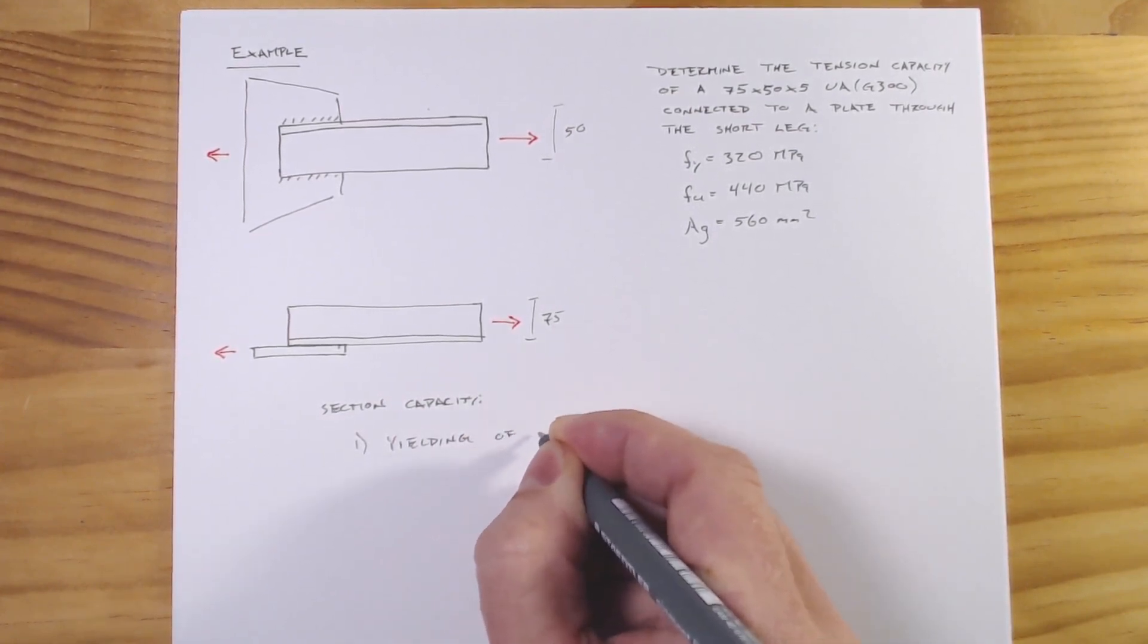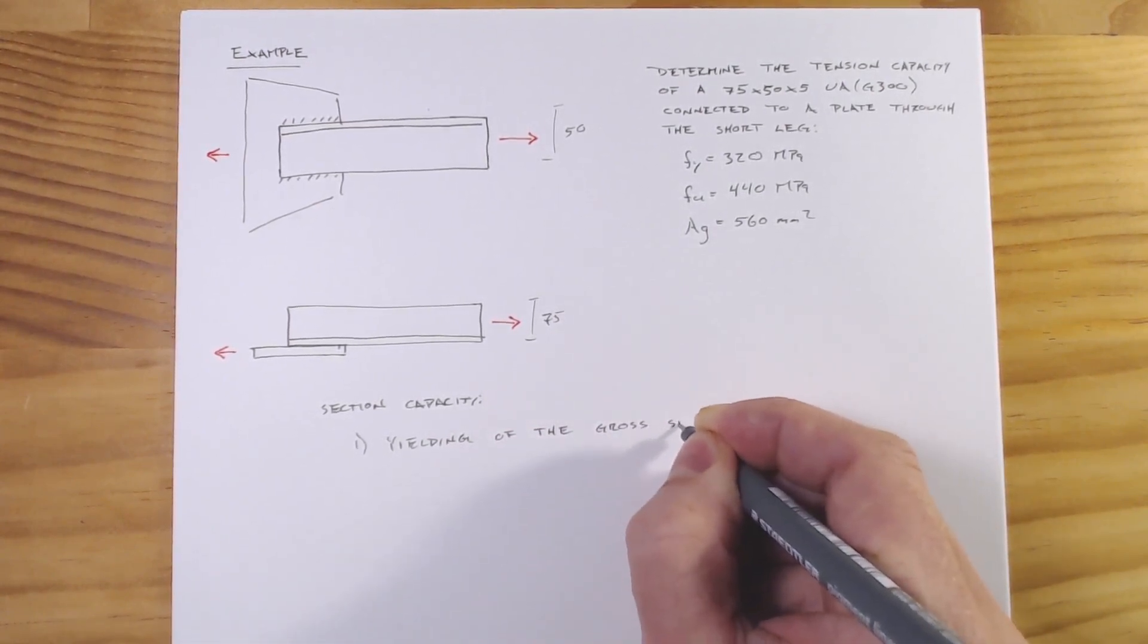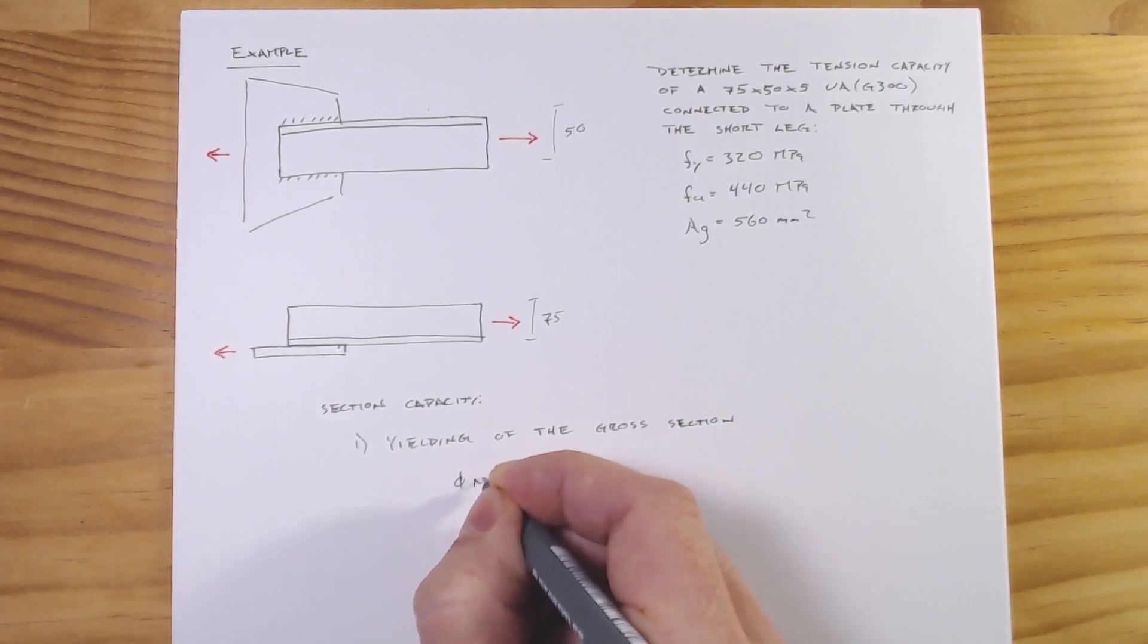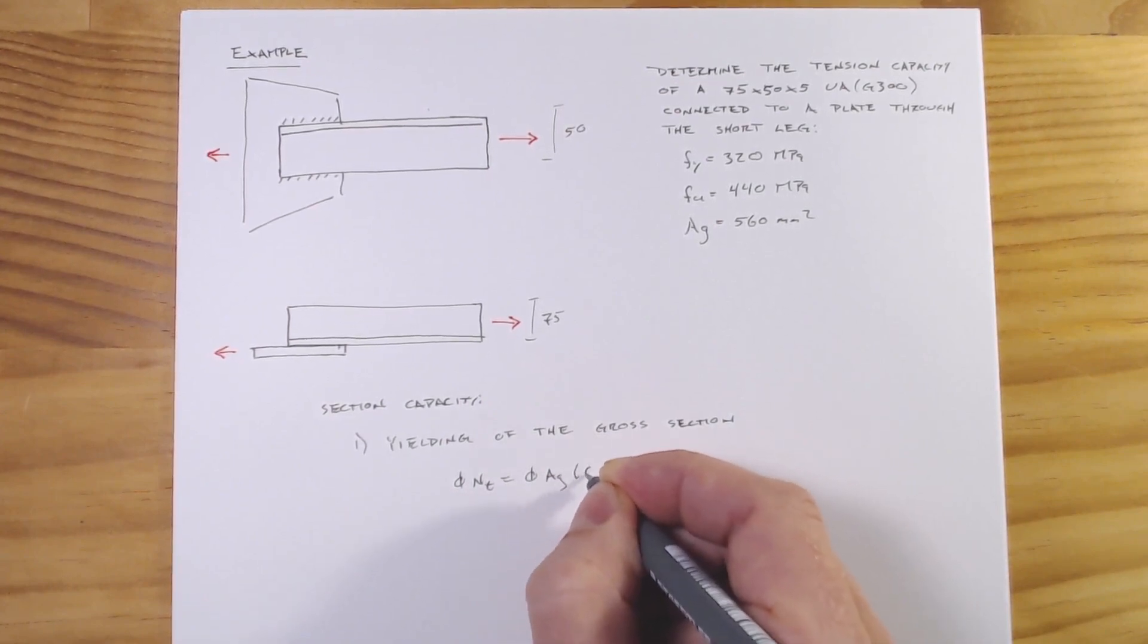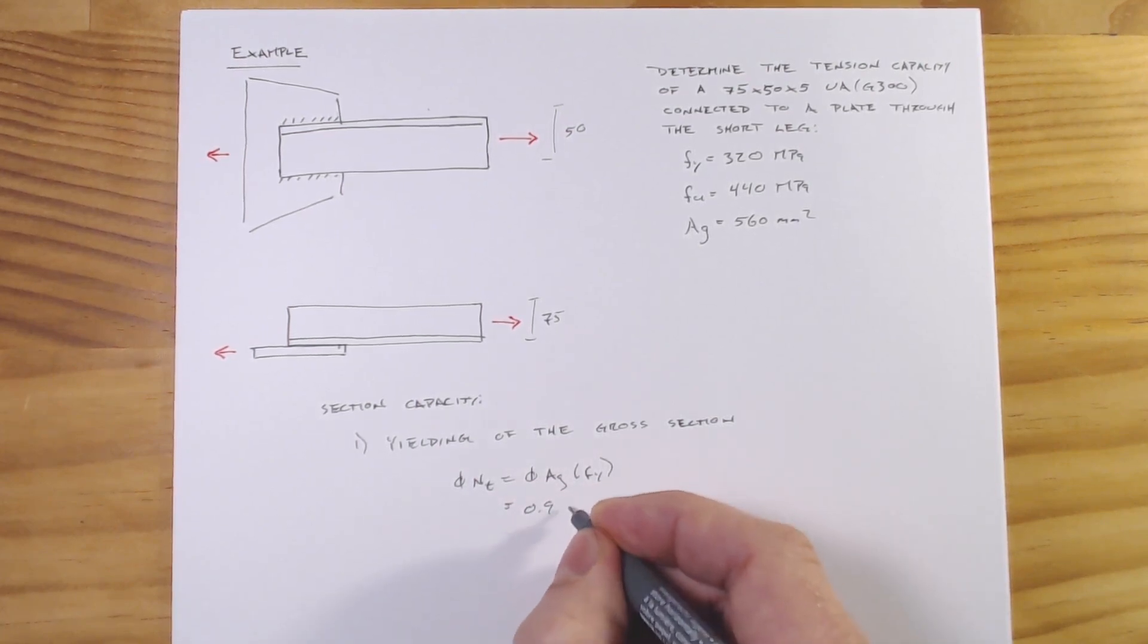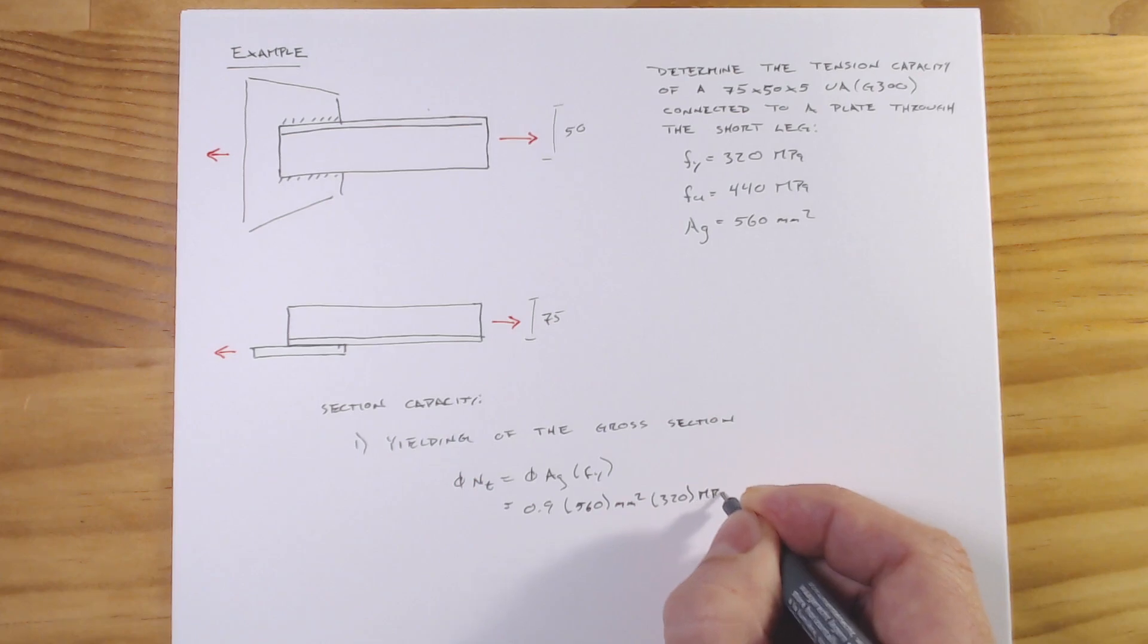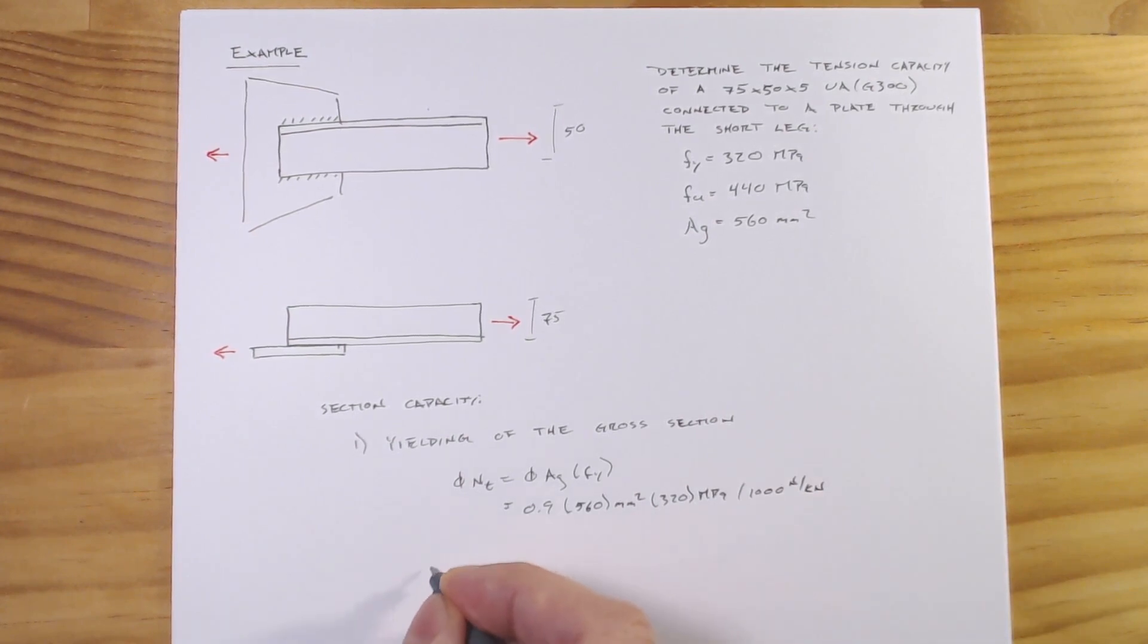Our first section criteria we have: yielding of the gross section. That would be φNst equals φ·Ag·fy. φ is going to equal 0.9 for when we're in tension. Ag is just 560 millimeters squared and fy is 320 megapascals.